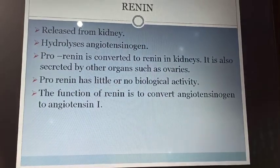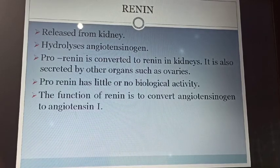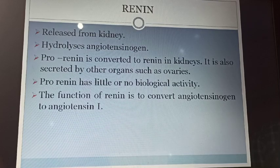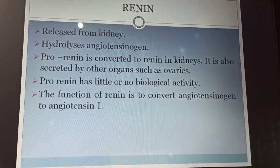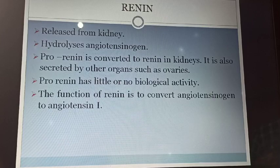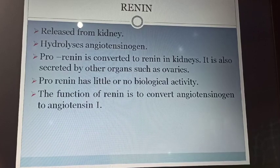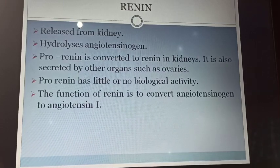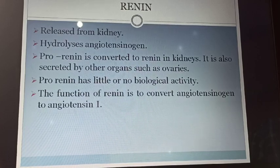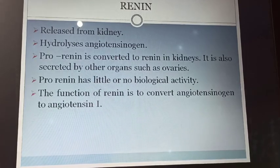Let's talk about renin. Renin is an enzyme which is produced by the juxtaglomerular cells of the kidney. It is also known as angiotensinogenase. The main function of renin is to convert angiotensinogen into angiotensin-1. When systemic hypotension occurs, the JG cells release renin in response to low blood pressure. The main function of renin is to increase the blood pressure. Renin is made up of 340 amino acids. Once renin is released, it directly enters into the systemic circulation.